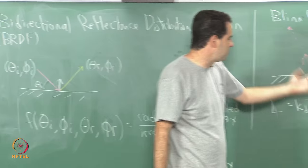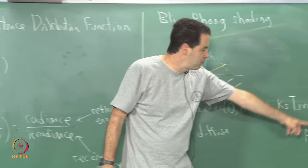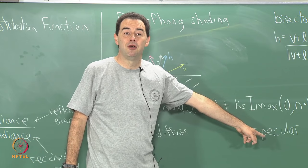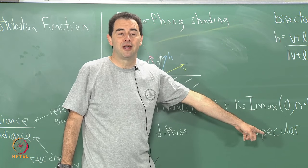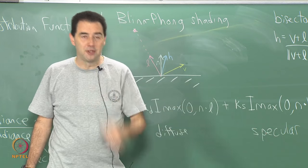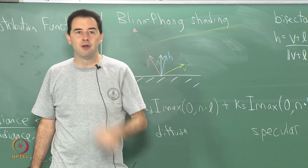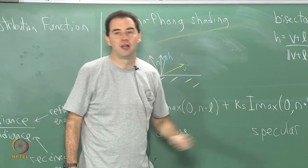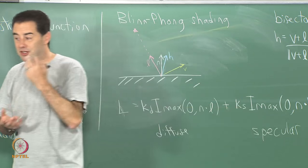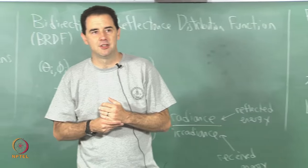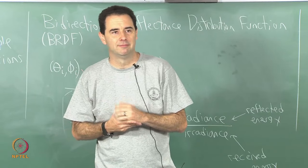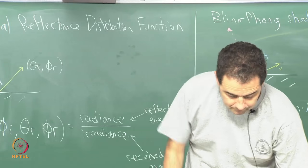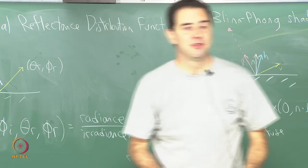If the surface is diffuse it might not matter, but if you have a specular component — if it starts looking very close to a mirror — then to look right you have to very carefully take into account each one of the eyes. The left and right eye should receive different light. That seems correct, right? Any questions?